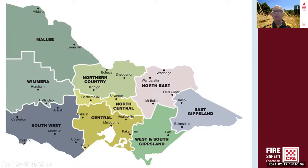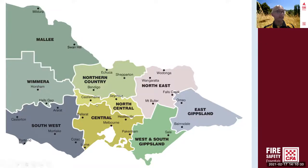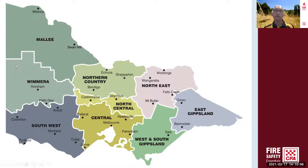La Nina conditions are expected to reduce the risk of prolonged fire activity across most of Victoria compared to last year. La Nina means increased rainfall across much of Australia — as evidenced in Victoria with wetter-than-normal conditions — and cooler daytime temperatures. The last La Nina appeared during the winter of 2017-2018, followed by El Nino in 2018-19, showing a cyclical pattern in this weather phenomenon.